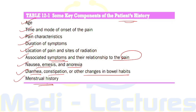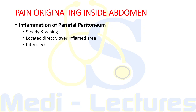Abdominal pain can either originate inside the abdomen, or there can be referred pain to the abdomen, metabolic abdominal crisis, and neurogenic causes. Pain originating inside the abdomen is further subclassified as: pain due to inflammation of parietal peritoneum, obstruction of hollow viscera, vascular disturbances, and pain arising from the abdominal wall.